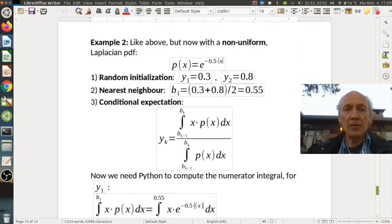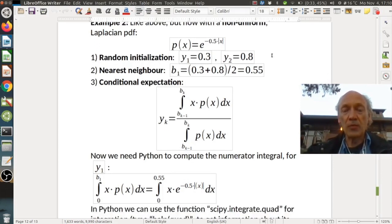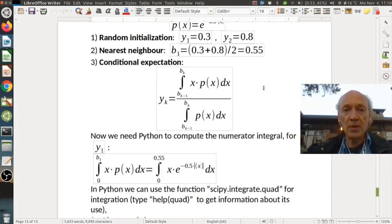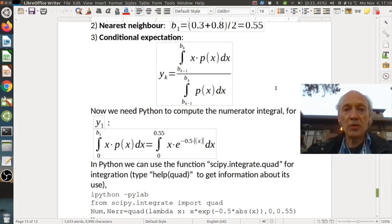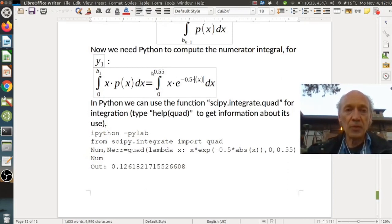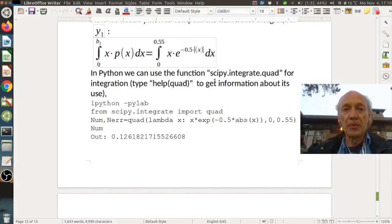Here the more interesting example hence is a non-uniform pdf like Laplacian. Here we see a Laplacian probability density function e to the minus 0.5 times magnitude of x. This is a more realistic example, for instance, for speech. We again take our random initialization, same points, nearest neighbor, same as before, but now the conditional expectation. This becomes more tricky now because we have our non-uniform pdf. So here we can see our expectation over the interval of the lower interval from 0 to 0.55, x times p(x), and here we have our Laplace distribution now. Instead of using our simple rectangular approximation that we saw before, we can use the Python function scipy integrate quad for integration.